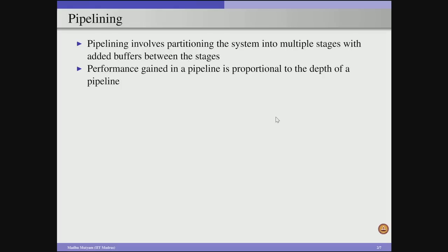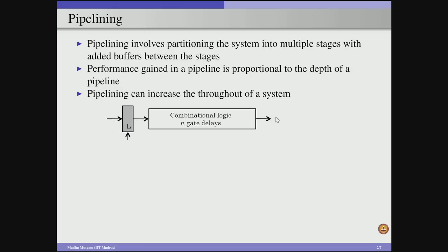Performance improvement through pipelining is proportional to the depth of a pipeline. If I divide computation into n tasks, in an ideal scenario I can get a performance improvement of n times. This performance can be represented using throughput, and pipelining will improve the throughput of a system. Consider a combinational circuit which takes n gate delays to compute a task. Given an input, it takes n gate delays to produce the output. Without partitioning, we process inputs for every n gate delays, giving a bandwidth of 1/n.